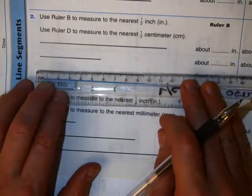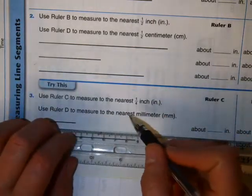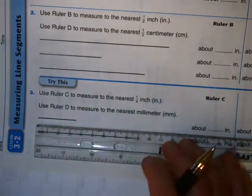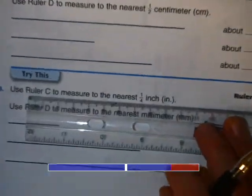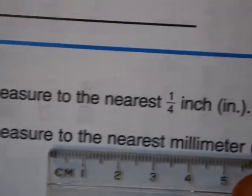And then finally, we're going to try to measure to the nearest millimeter. So instead of quarter inch, we're going to millimeter. If we look really closely at a centimeter, you might wonder what is a millimeter.